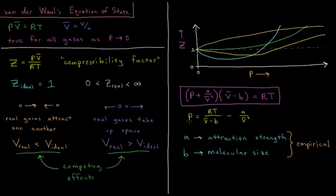We could plot the pressure here. The pressure if we solve for P is equal to RT/(V̄ - B) - A/V̄². So what are these two parameters here, this A and B?